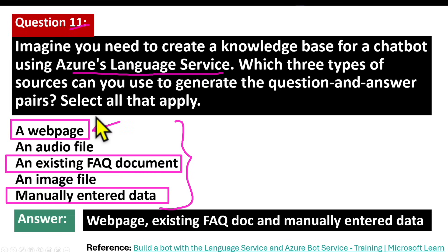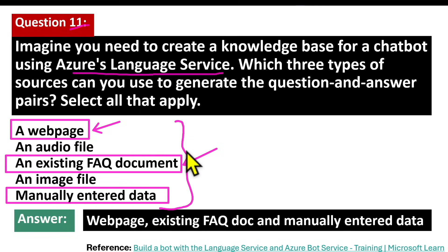What is a web page? You can extract question and answer pairs from the content of a website you share. Second is an existing FAQ document. If you already have a document that contains frequently asked questions and their corresponding answers, you can utilize that as a source of knowledge.